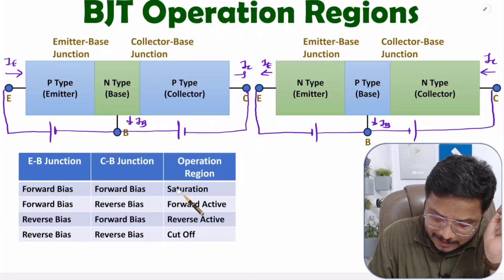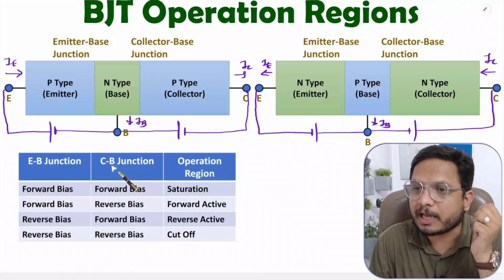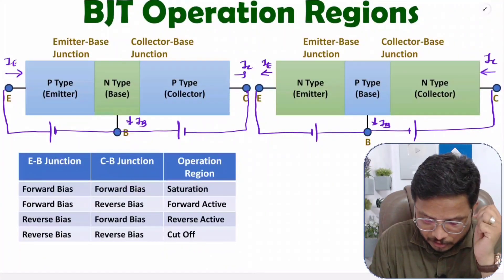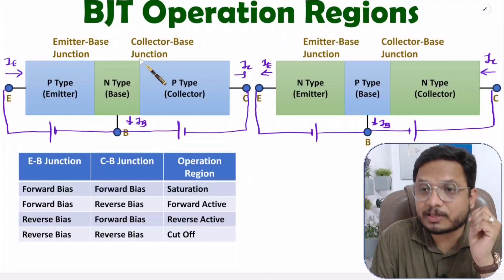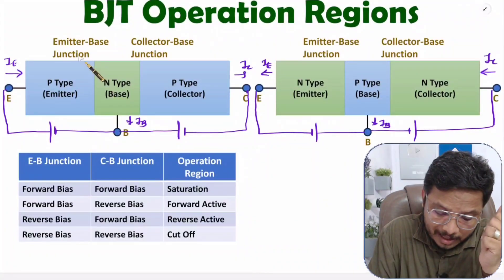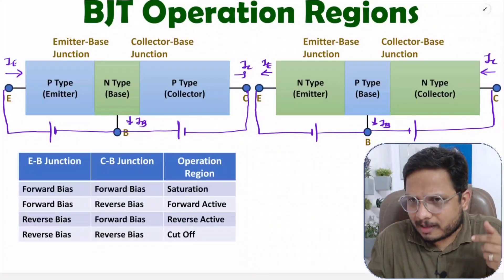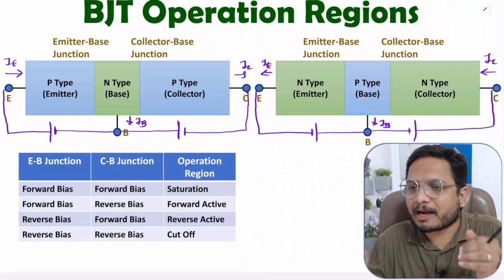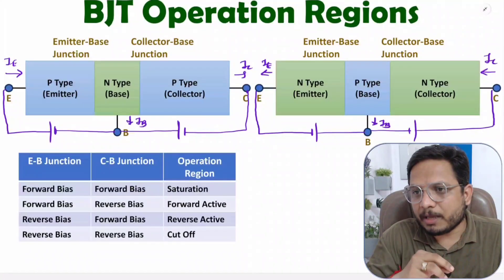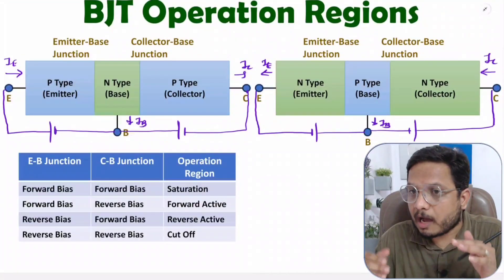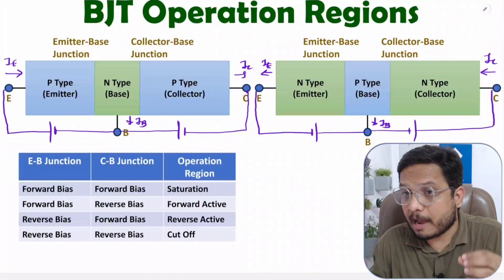To summarize: in saturation, both NPN and PNP have the emitter-base junction and collector-base junction in forward bias. In cutoff, both junctions are in reverse bias. In forward active, the emitter-base junction is in forward bias and the collector-base junction is in reverse bias. In reverse active, the emitter-base junction is in reverse bias and the collector-base junction is in forward bias. For NPN, the majority current flows due to electrons; for PNP, it flows due to holes. This will be explained further in the next class. Thank you for watching.